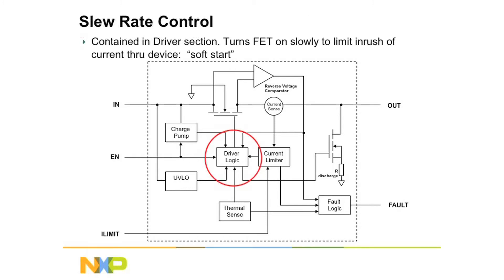The first feature to consider is the slew rate control, found inside the drive logic. Slew rate control means that instead of the switch turning on instantly, it gently turns on or gently turns off. This is really useful because you don't get an in-rush of current — it puts less stress onto the switch itself and less stress on the circuit around it. This is a feature which would be rather difficult to build yourself from discrete components.